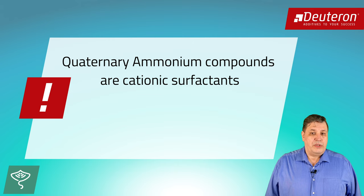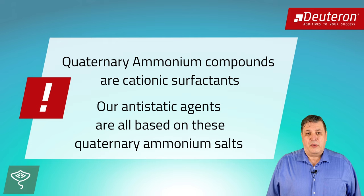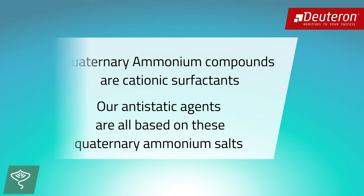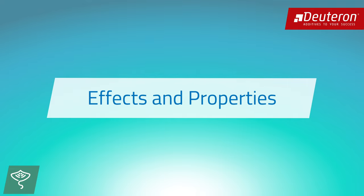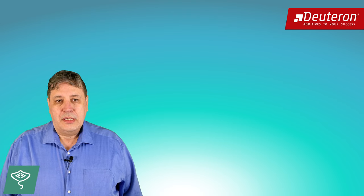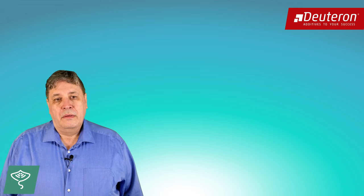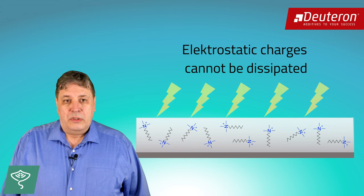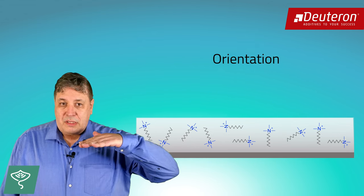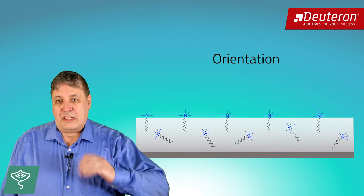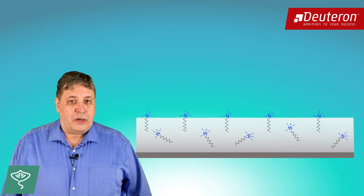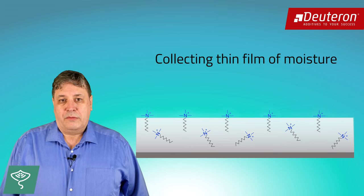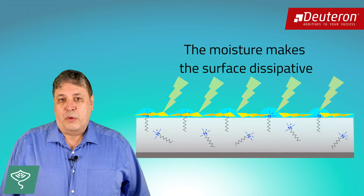Our quads belong to the group of cationic surfactants. The Deuteron company offers antistatic agents only based on quaternary ammonium salts. The strong polar character of these ionic liquids can lower the resistivity of liquid coatings. Quad additives are even embedded in the matrix. To create an effect, they have to migrate to the surface. When a molecule has arrived at the surface, the polar part orients itself on the surface. The non-polar part remains in the lacquer matrix. The protruding part is hygroscopic. This leads to adsorption of water from the air humidity. This is the effect of lowering surface resistivity.